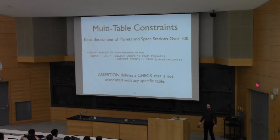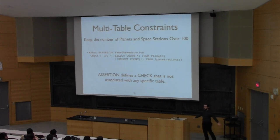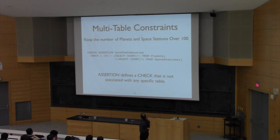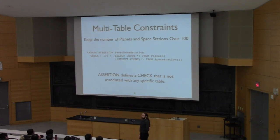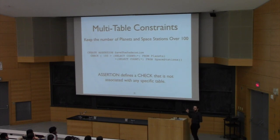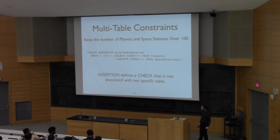That's our divergence into data modeling and constraints. Any questions on anything we've talked about — data modeling, constraints, project one? One correction was noted: the check constraint example should be 'at most 100 space stations plus planets,' not 'at least.' Good catch — that's the 'check to see if you're awake' feature of today's presentation. See you next lecture.